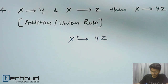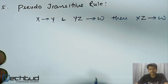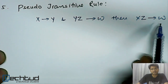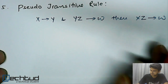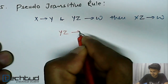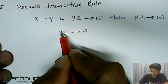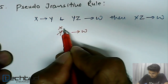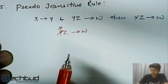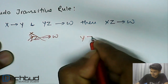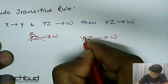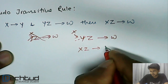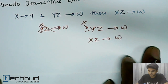We have another inference rule called the pseudo-transitive rule. Pseudo-transitive rule says that if x can determine y and yz collectively can determine w, then xz can determine w. If you look closer, it is obvious: yz determines w, and y can be determined by x. So we can substitute x for y, meaning xz can determine w. That is our fifth inference rule, the pseudo-transitive rule.